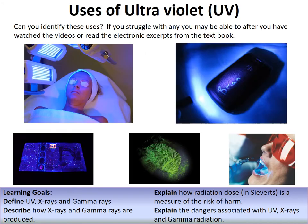Uses of UV include: tanning beds; marking property with a special pen that glows under UV light; identifying forged banknotes, since real notes are designed with dyes that glow under UV light; forensics and fingerprinting. UV light is also used in dentistry - when fitting braces, dentists wear orange glasses and use an orange shield to protect their eyes, and UV light is used to cure the adhesive that bonds brackets to teeth.